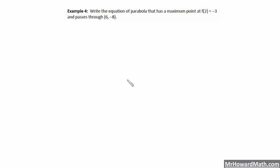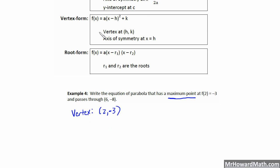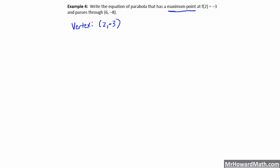Here is another example, a little different from the others. It says: write the equation of a parabola that has a maximum point at f of 2 equals negative 3 and passes through 6 comma negative 8. Since they give us the maximum point — meaning the vertex — we should use the vertex form. The vertex is at 2 comma negative 3, and since the vertex is a maximum, the parabola opens downward.